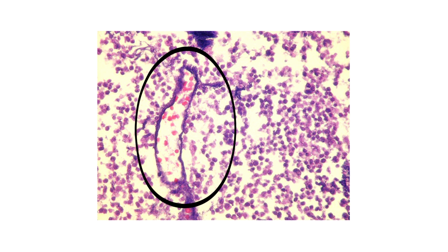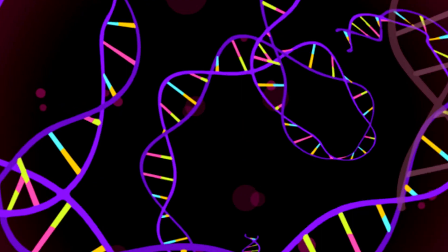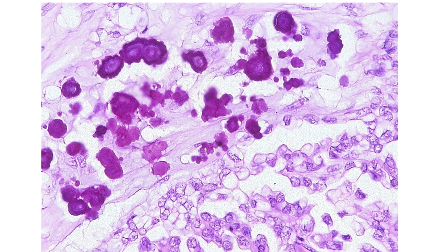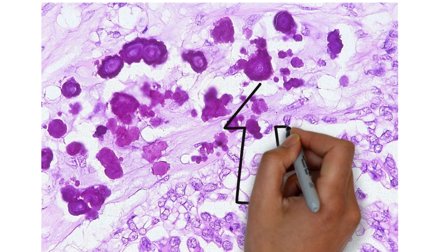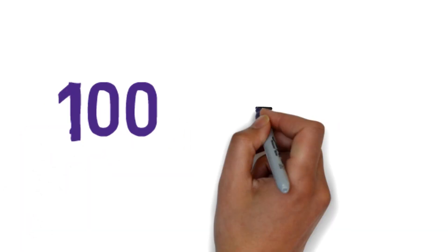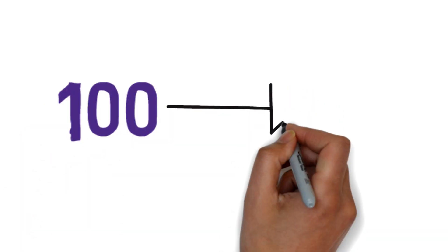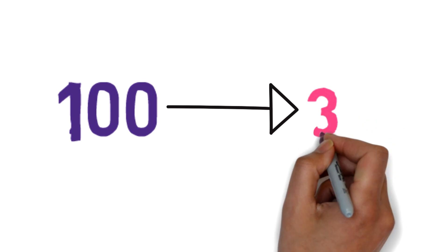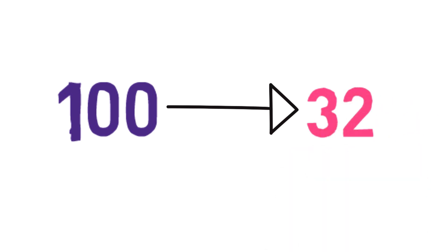Dr. Azzopardi correctly identified the basophilic material as DNA in 1959. Before his publication, this material was infrequently described in the literature and was presumed to be caused by calcium deposition. Azzopardi examined 100 cases of oat cell carcinoma of the lung and identified coarsely granular basophilic material encrusted within vessels in 32 cases.